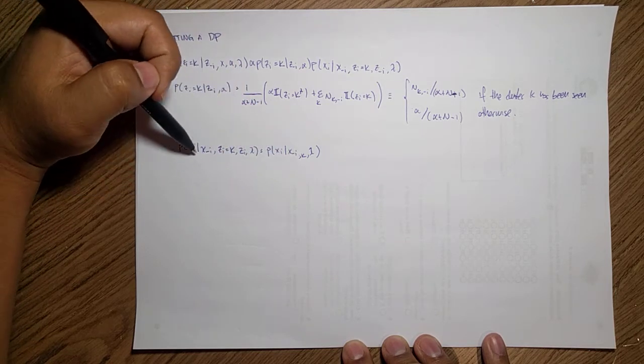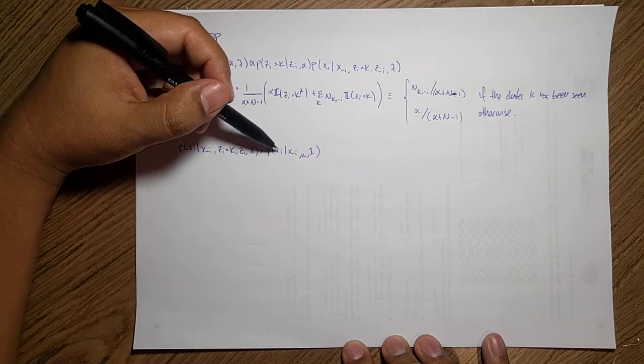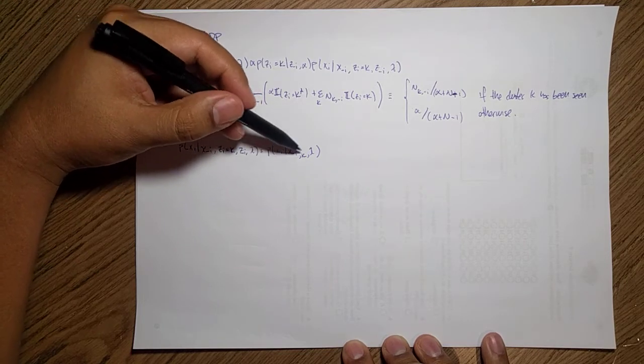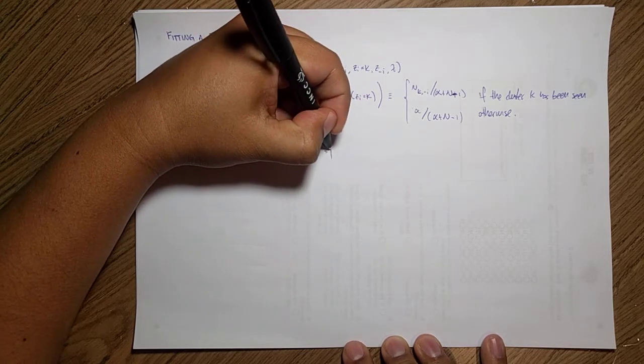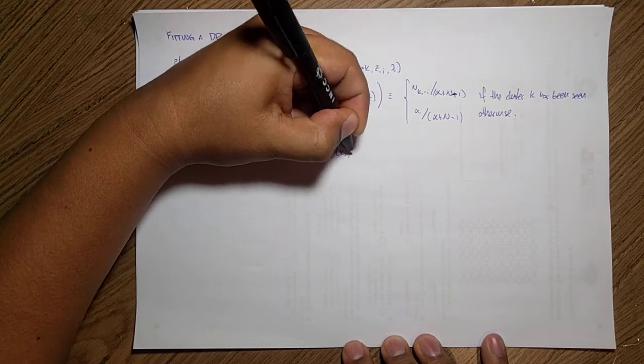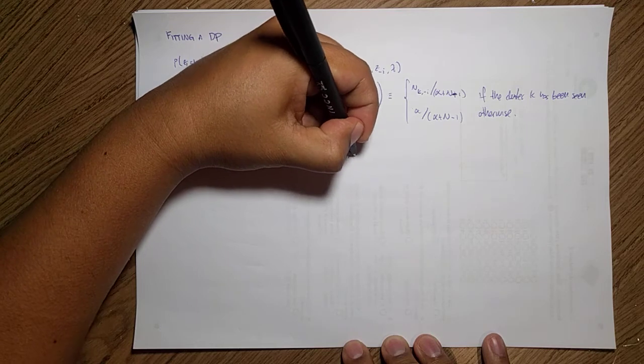I'm going to just say that this likelihood is simply my other data and the xi is in the k cluster with my lambda here.